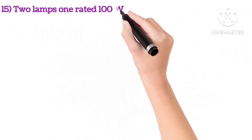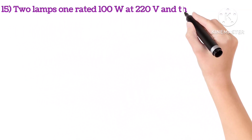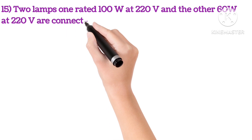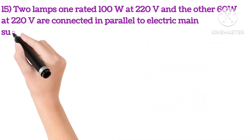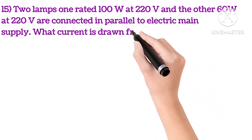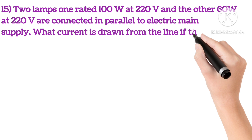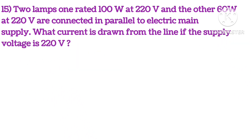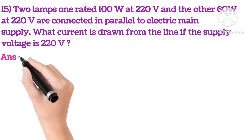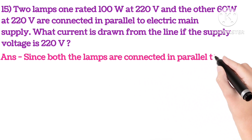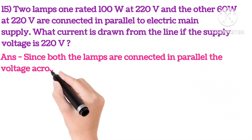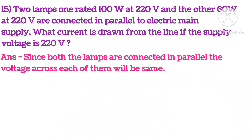15th: two lamps, one rated 100 watts at 220V and the other 60 watts at 220V, are connected in parallel to electric main supply. What current is drawn from the line if the supply voltage is 220 volts? Now since both the lamps are connected in parallel, the voltage across each of them will be the same.